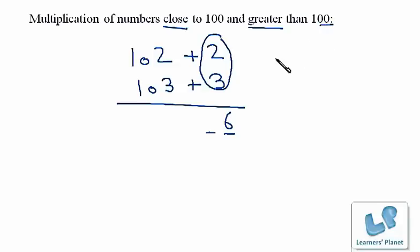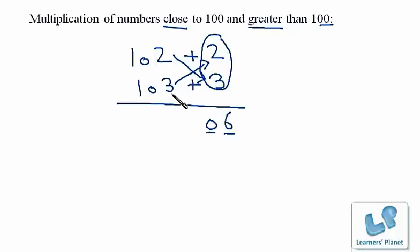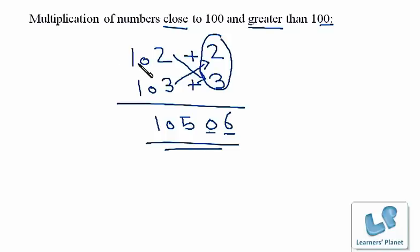That's why we will put a zero here to make it 06. Now we need to cross add — we can either add 3 with 102 or 2 with 103, the answer will be the same: 105. So the multiplication of 102 and 103 is 10506.